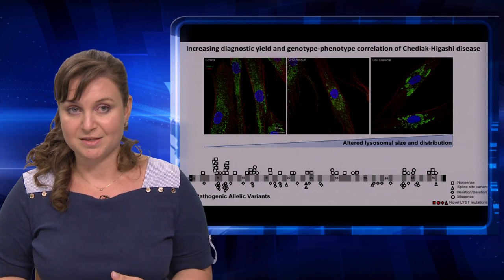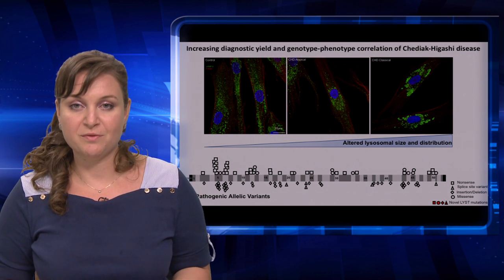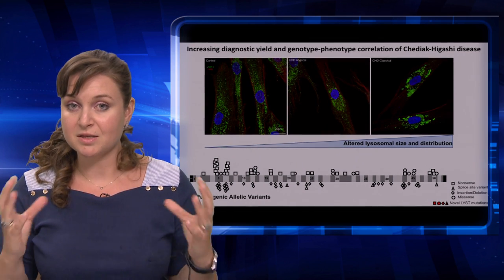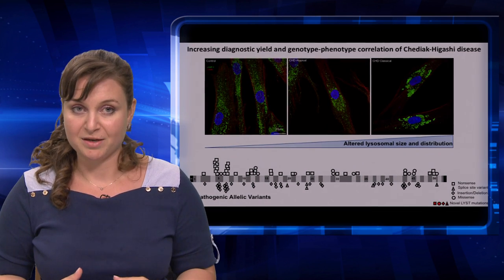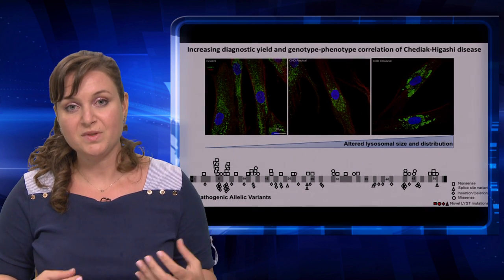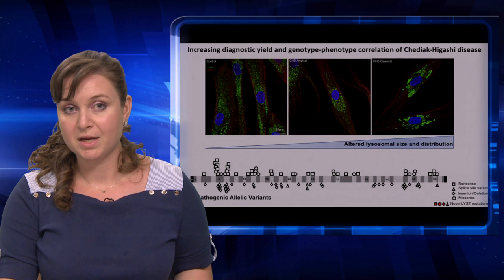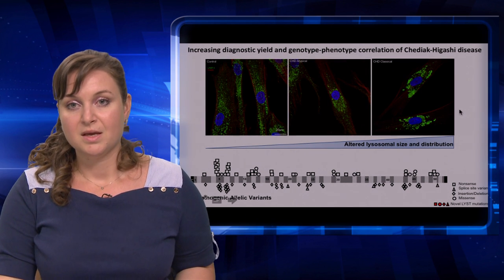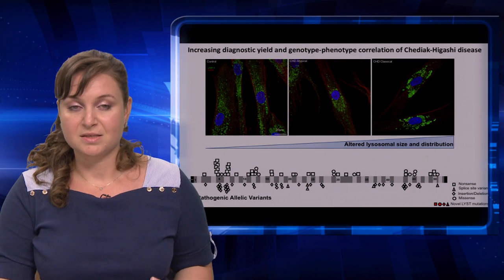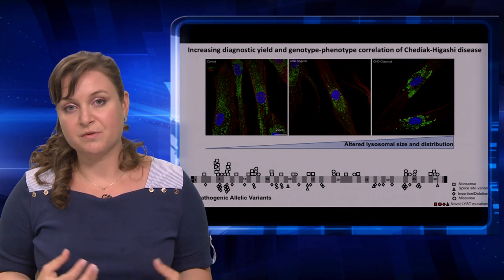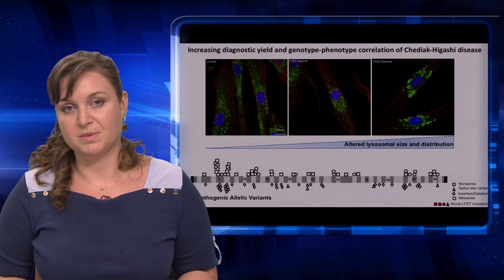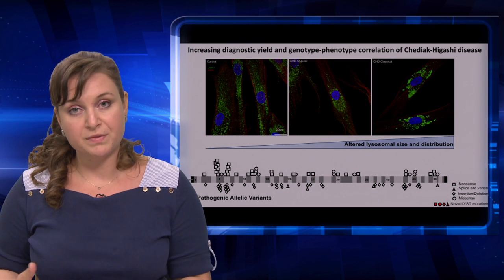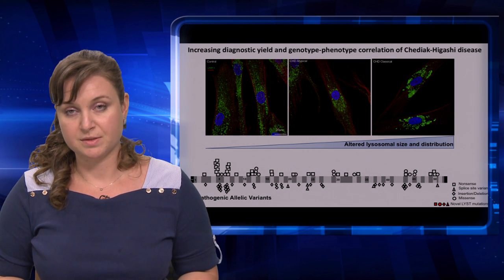To visualize lysosomes in human fibroblasts, we stain with an antibody against the lysosomal membrane protein LAMP3, shown here in green. Containing acids and several types of digestive enzymes, the lysosomes recycle and digest unwanted cellular waste.